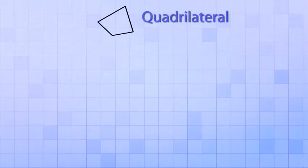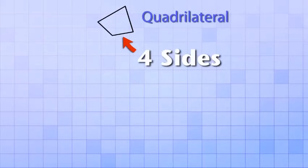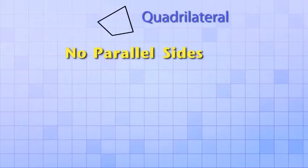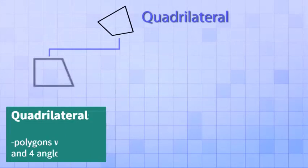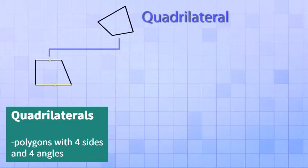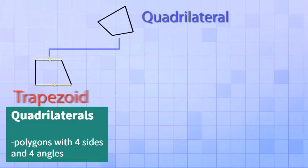So to summarize, any polygon that has exactly four sides is called a quadrilateral. And if it has no parallel sides, we still just call it a quadrilateral. But if it has one and only one pair of parallel sides, we call it a trapezoid.